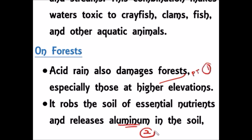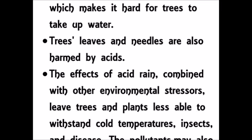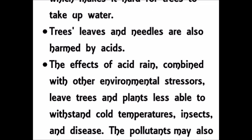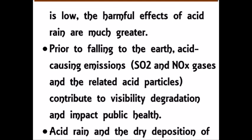When acid rain falls on the soil, essential nutrients and aluminum are leached away from the soil, causing trees to get affected. Acid rain also affects the leaves and needles of trees. Not all soils are equally affected — some soils have a buffering capacity which can neutralize the acid rain and protect plants. Whenever the soil's buffering capacity is low, the harmful effects of acid rain are much greater.